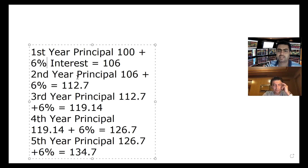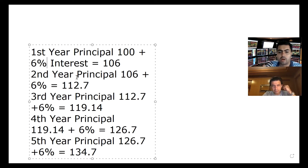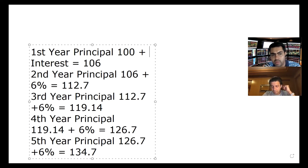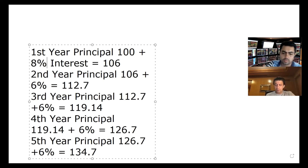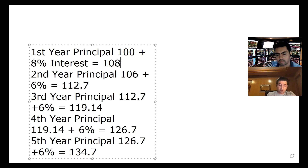If you're getting 8% a year, let's see how much is the difference. Give me the calculation for 8%. Number one: your base principle is 100 plus 8%, that's 8 rupees.